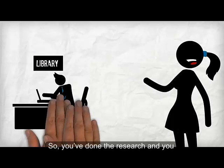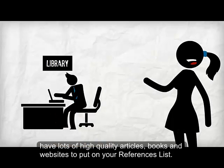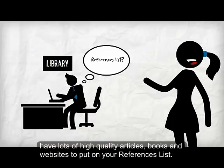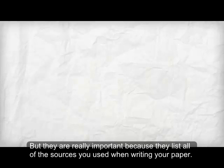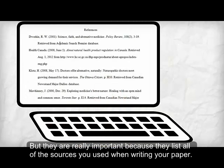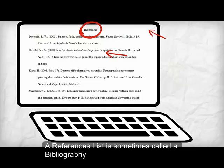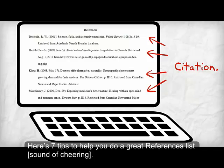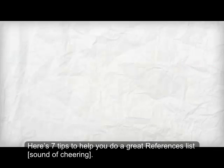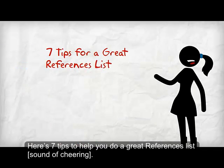So, you've done the research and you have lots of high-quality articles, books, and websites to put on your references list. We all know references lists in APA are fussy and take time. But they're really important because they list all of the sources you used when writing your paper. A references list is sometimes called a bibliography, and each item in the list is called a citation. Here's seven tips to help you do a great references list.